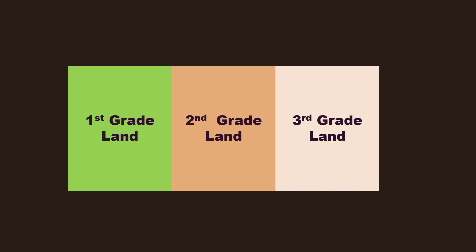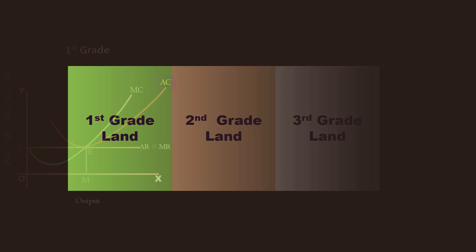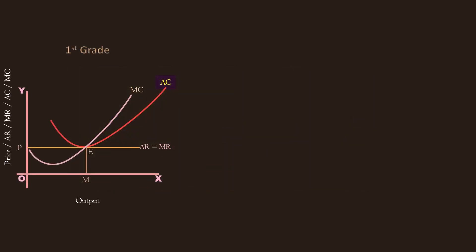The first group of settlers go to the island. They cultivate the first grade land and produce corn. The cost of cultivation is equal to revenue. Look at this graph. O P E M is the cost of cultivation. O P E M is revenue. Revenue just covers the cost of cultivation. No surplus, no rent. Hence, first grade land is marginal land.